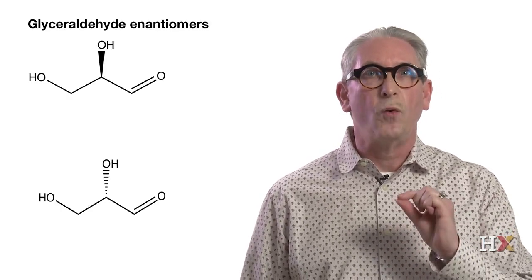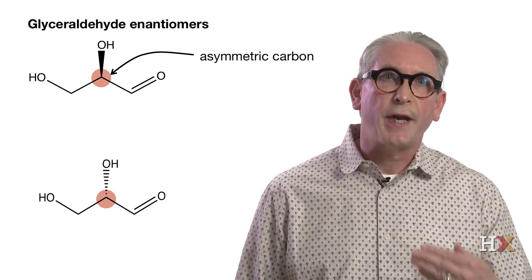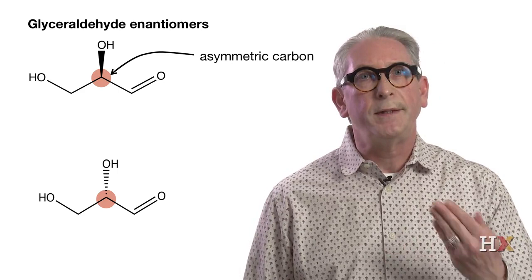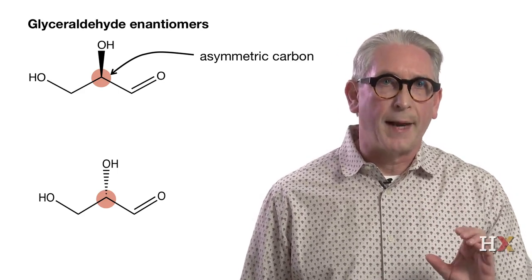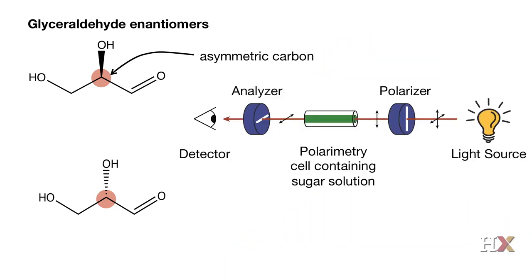For example, take the simplest monosaccharide — glyceraldehyde. It contains one asymmetric carbon and has two enantiomers. These enantiomers share many chemical and physical properties; however, they differ in the way they affect polarized light. We can take a light source and use a filter that selects only one plane of polarization. When this polarized light passes through a cell containing our chiral sugar, the plane of polarized light will rotate, and we can determine the direction and angle of rotation. If the rotation is clockwise, the sugar is said to be dextrorotatory and is designated by a plus sign.